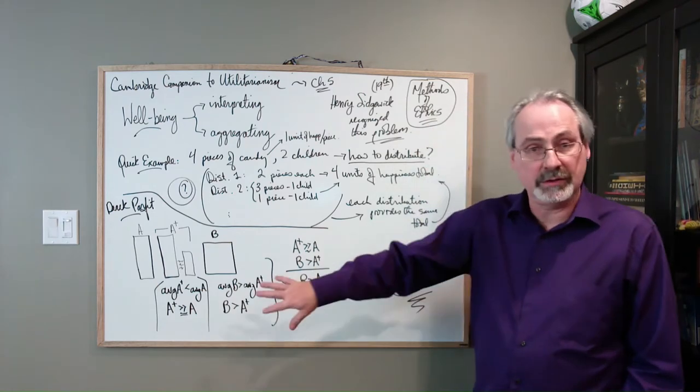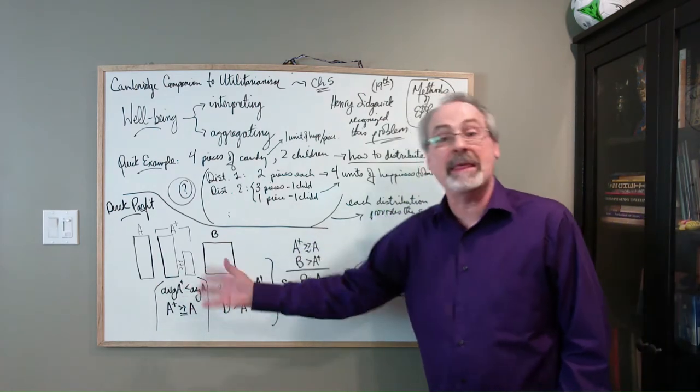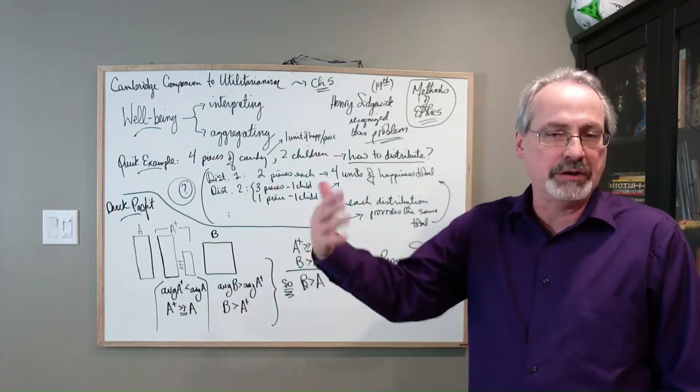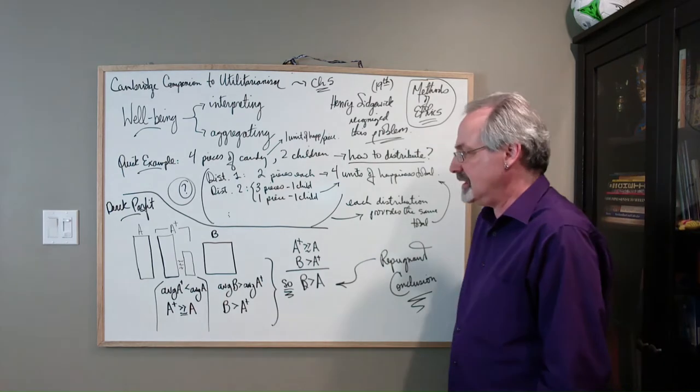which you can find in Julia Driver's book, Consequentialism. If you want to, you can have a look at her book for a more in-depth one and then jump to Parfit's, which is a more involved discussion. So here's a simplification of the simplification, but it basically goes like this.